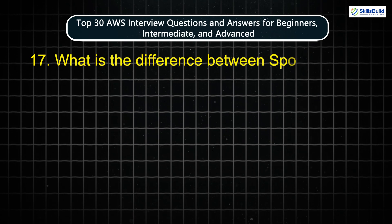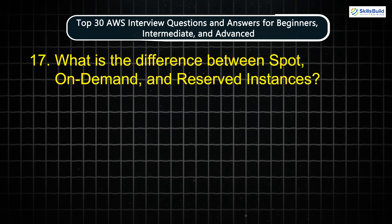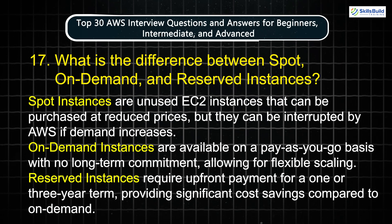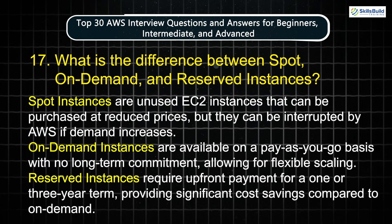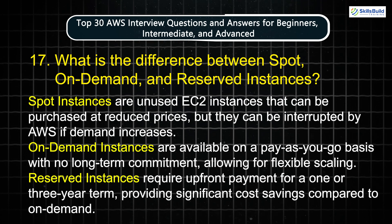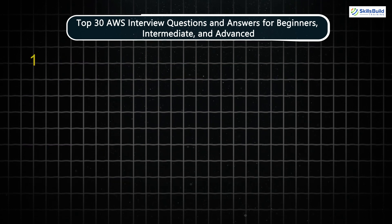Question 17: What is the difference between spot, on-demand, and reserved instances? Spot instances are unused EC2 instances that can be purchased at reduced prices, but they can be interrupted by AWS if demand increases. On-demand instances are available on a pay-as-you-go basis with no long-term commitment, allowing for flexible scaling. Reserved instances require upfront payment for a one- or three-year term, providing significant cost savings compared to on-demand.